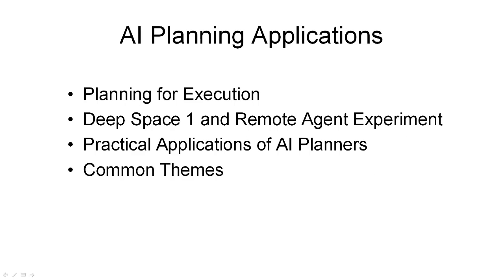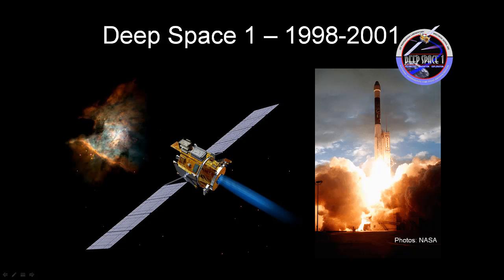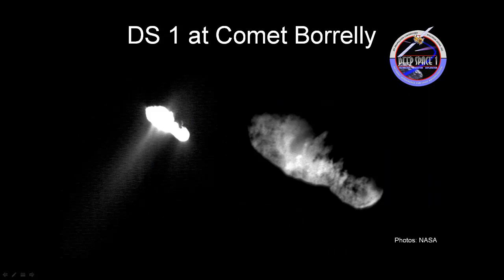We'll now look in some depth at a good example of how AI planning and plan execution techniques were used in practice. We'll see the importance of integrating planning into other key systems for real-time task assignment, system diagnosis, condition monitoring, and execution-time plan repair. Deep Space One launched from Cape Canaveral in 1998 and tested 12 advanced high-risk technologies in space, including ion thrusters and advanced onboard automation. In a successful extended mission it operated through to 2001 and encountered Comet Borrelly. Deep Space One included a Remote Agent Experiment, RACS, to demonstrate both ground-based and onboard AI and remote plan execution.